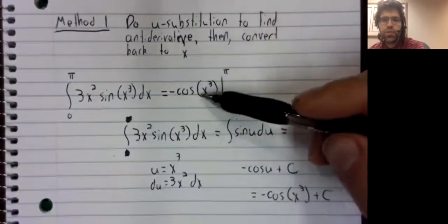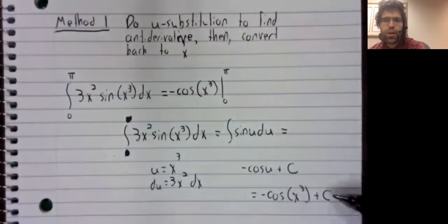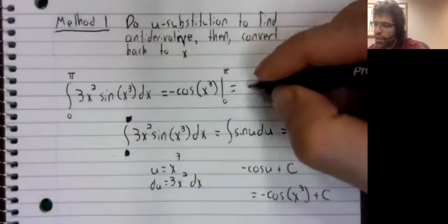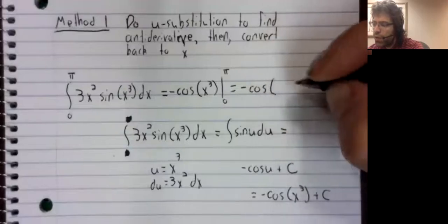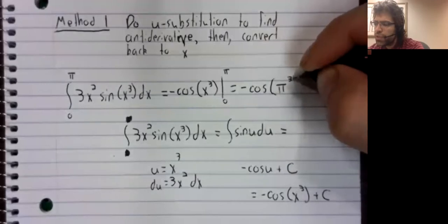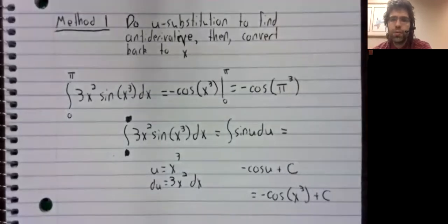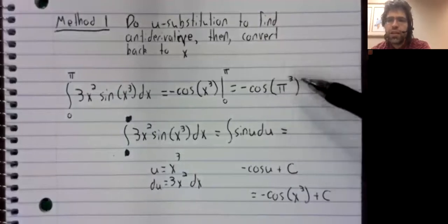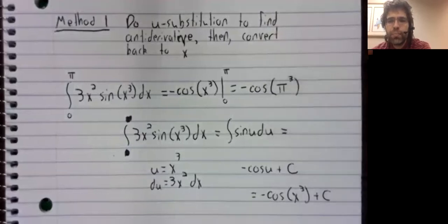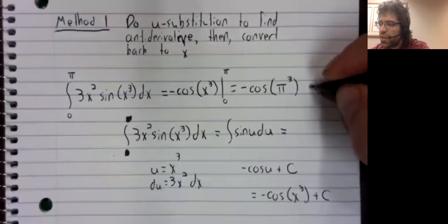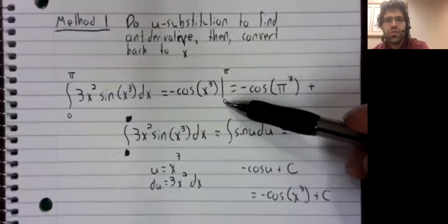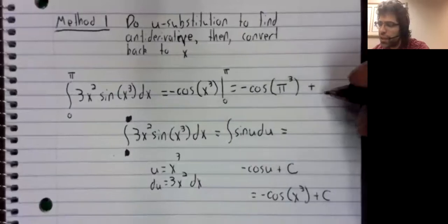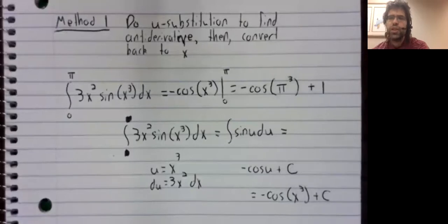And now that we have the anti-derivatives, we can use the fundamental theorem. Remember that when we use the fundamental theorem, we don't bother with the constant. So the cosine of pi cubed, that's not something that we know, we'll just write it down. Minus negative the cosine of zero cubed is the cosine of zero, which is one.